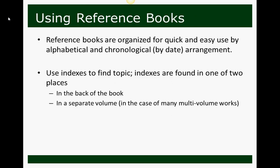When using reference books, they're organized for quick and easy use, either alphabetically or chronologically by date, depending on the type. So if you know what letter something starts with, or the date something happened, you can find it fairly quickly. All reference books utilize indexes — use those indexes to find your topic. Indexes can be found in one of two places: in the back of the book if it's a single volume, or as its own separate volume if it's a multi-volume set.